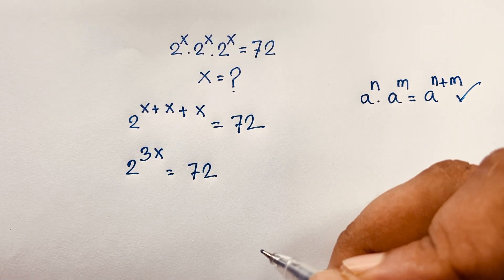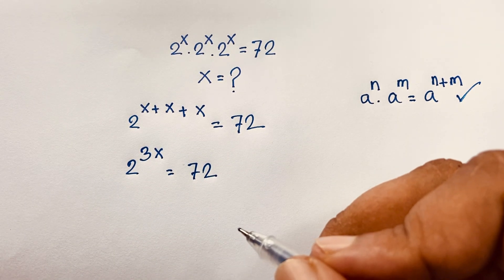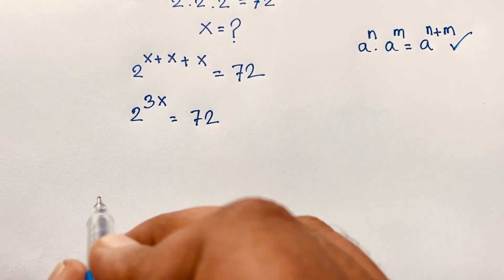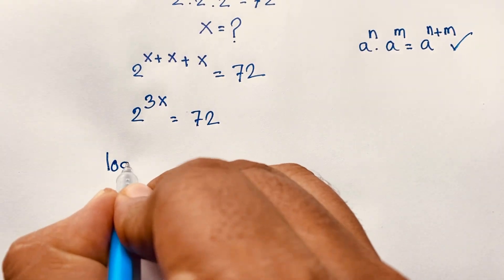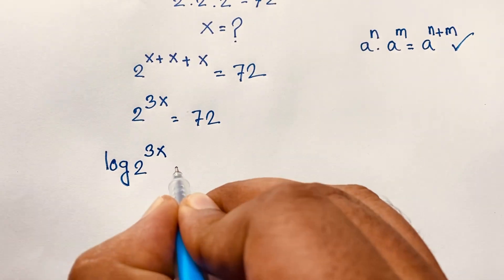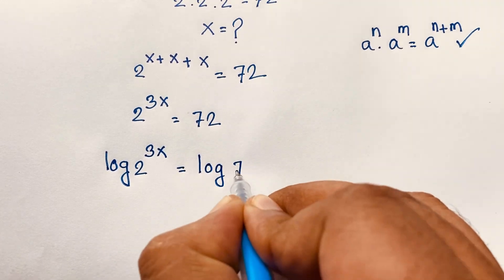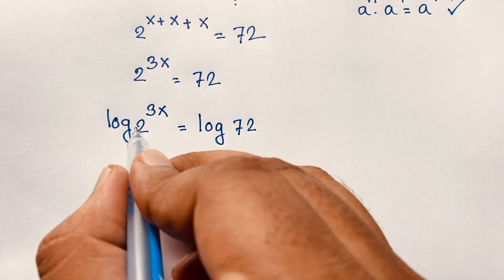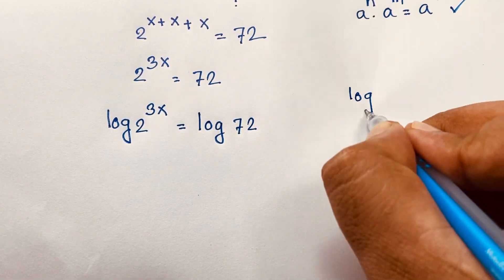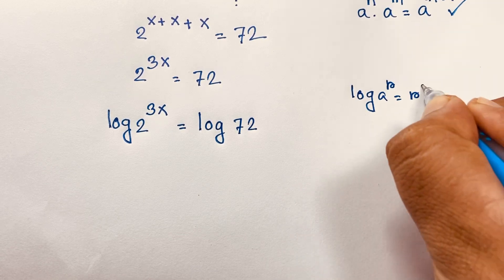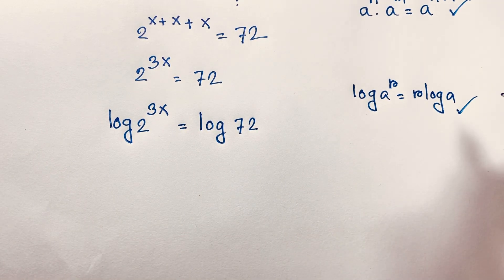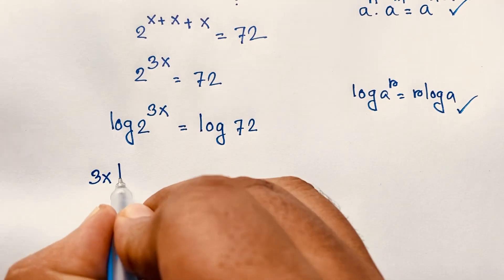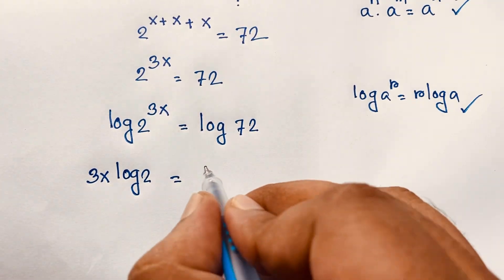Now we'll find out the value of x in this exponential math problem. We apply the natural log to both sides: log of 2 to the power 3x is equal to log 72. Using the formula log(a^r) = r·log(a), the exponent moves to the front, giving us 3x·log 2 is equal to log 72.